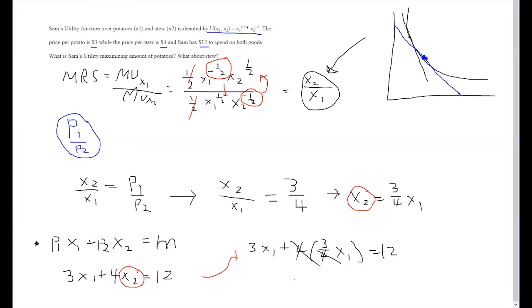These 4s cancel out, so we're left with 3x1 plus 3x1 equals 12, 6x1 equals 12, or x1 equals 2.